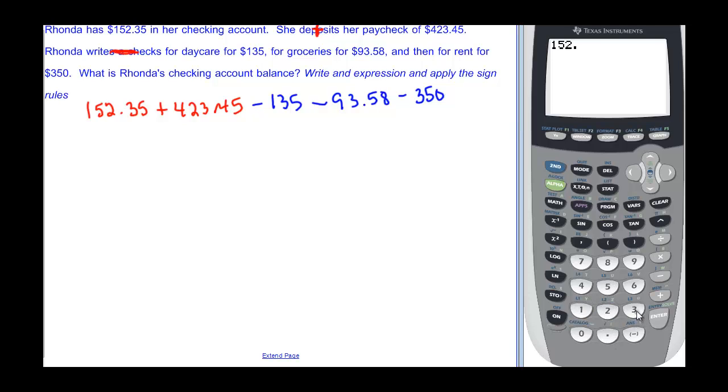$152.35 plus $423.45 minus $135 minus $93.58 and minus $350. And her grand total in her account is negative $2.78. So she's in the hole $2.78.